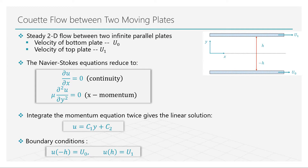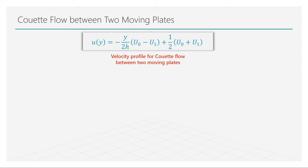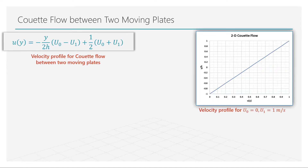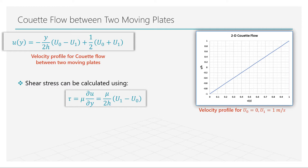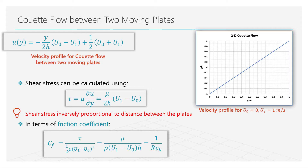By substituting the boundary conditions shown here, we can easily show that the velocity profile takes the following form. Plotting this equation across the width between the two plates, we see a linear velocity distribution. Since shear stress is directly dependent on the velocity gradients in the flow, the consequence of a linear velocity profile is that the shear stress is constant. The shear stress is directly proportional to the difference between the velocities of the two plates and inversely proportional to the distance between the plates. Scaling the shear stress term appropriately, we obtain a non-dimensional form called the friction coefficient, which is dependent only on the Reynolds number of the flow.